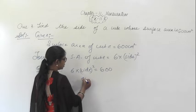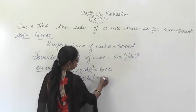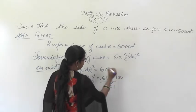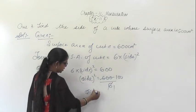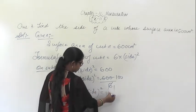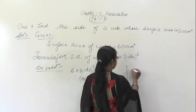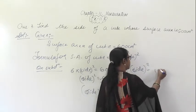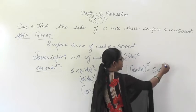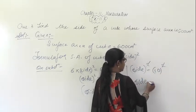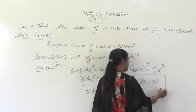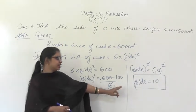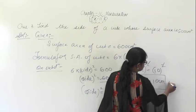From here, side squared will be equal to 600 upon 6, which gives 100. We can write 100 as 10 squared. So this square and this square will get cancelled, and side will be 10 centimeters. So the side of the cube is 10 centimeters. This is the answer.